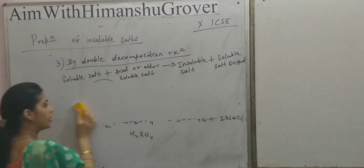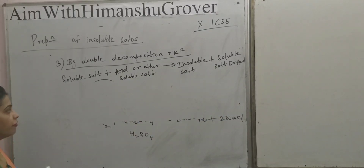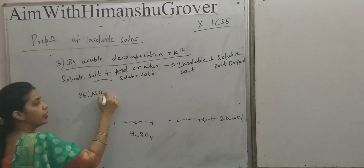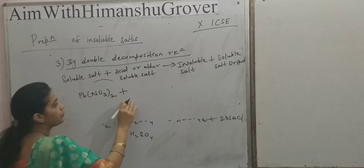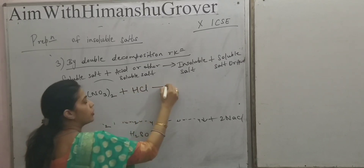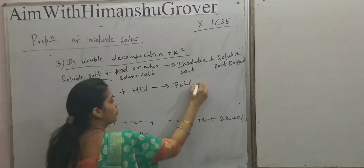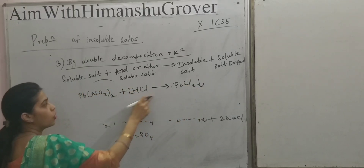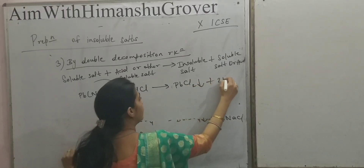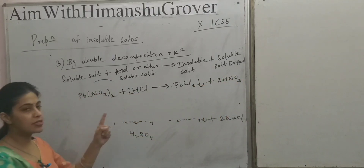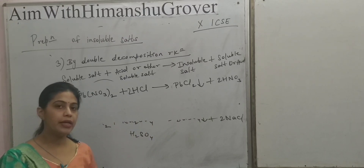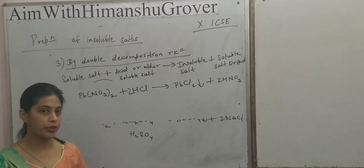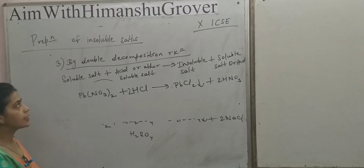Take one more example. If we take lead nitrate, Pb(NO3)2, which is a soluble salt, plus HCl, then the products are PbCl2, which is insoluble, plus HNO3, nitric acid. PbCl2 is an insoluble salt — it is soluble in hot water only, not in cold water. So this is the third method for preparing an insoluble salt.